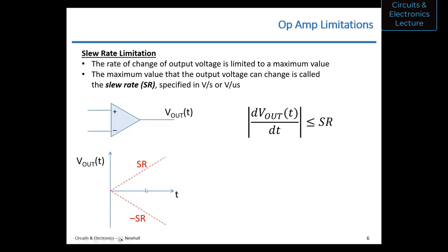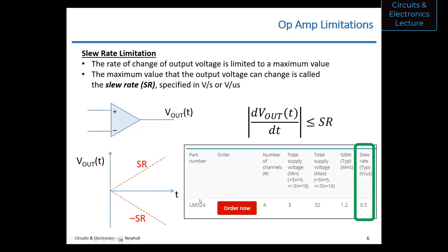For the LM324, the slew rate is 0.5 volts per microsecond, which is 500,000 volts per second. Time-varying voltages with a higher rate of change than this would be distorted at the output. This is something you have to take into account when designing an op amp circuit. Those are the practical limitations of an op amp.